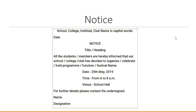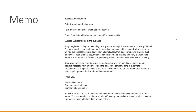Looking at the screen, this is the layout or format for a notice. At the top, the name of the school, college, or institute has to be there. The date goes on the right side, then comes the heading, then the title of the notice, then the main body. Important points to mention include date, time, and venue. Remember the seven C's of communication when drafting a notice. This is also the layout of a memo, with the format given on screen.